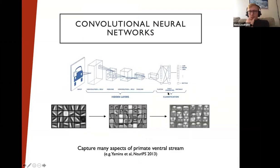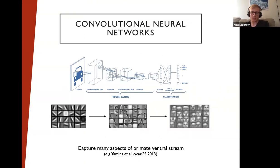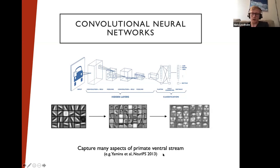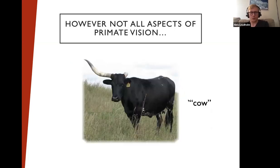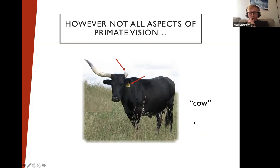Convolutional neural networks are an example of a system that has solved the backbone of this problem well — achieving invariance and abstraction — and they perform impressively on object recognition, possibly with some correlates to what's happening in our own brain in terms of predicting neural activity. But clearly this is not the full story. The representations at the highest levels of these systems are generally quite impoverished compared to our own — there's no understanding that a tag is in the animal's left ear or that it's missing a horn.